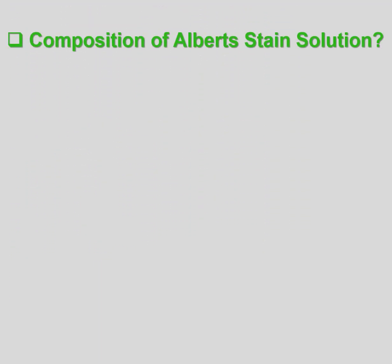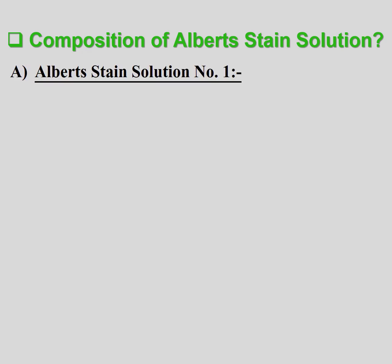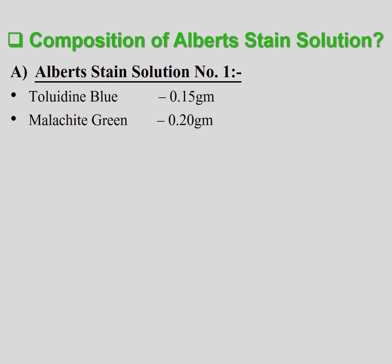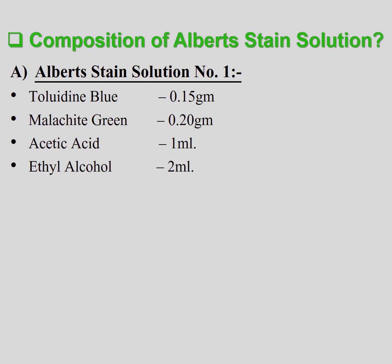Composition of Albert's Stained Solution No. 1: Toluidine Blue 0.15 gram, Malachite Green 0.20 gram, Acetic Acid 1 milliliter, Ethyl Alcohol 2 milliliter, Distilled Water 100 ml.